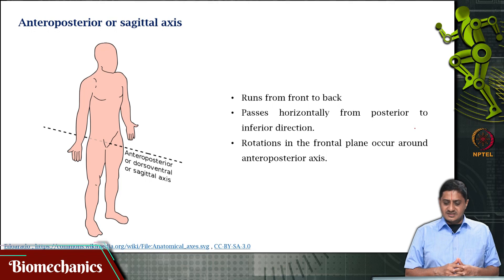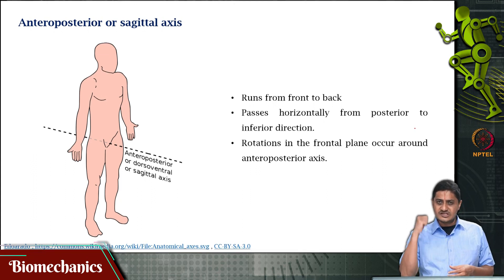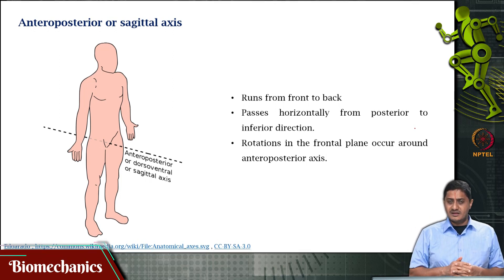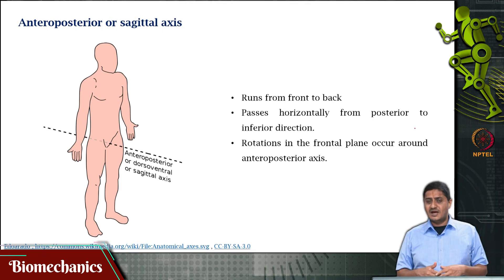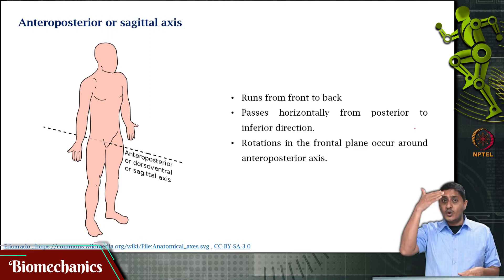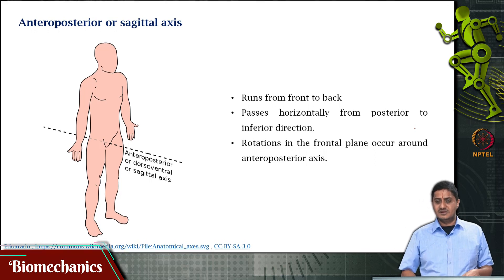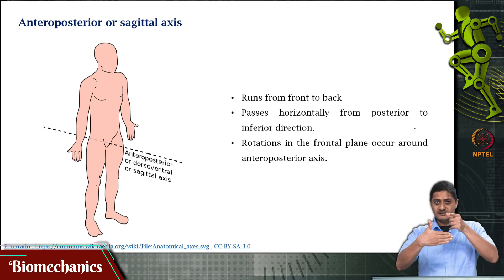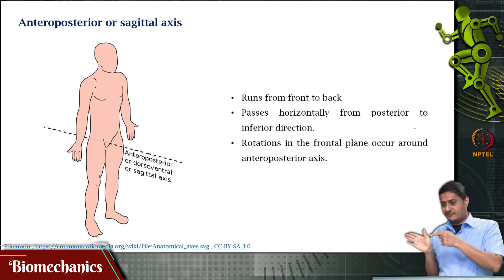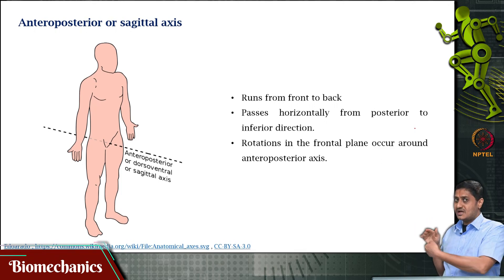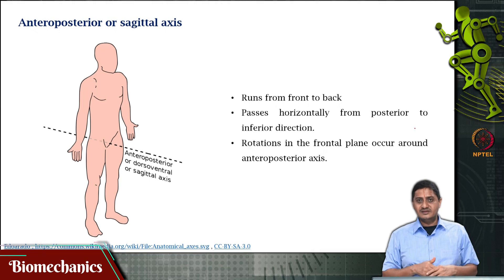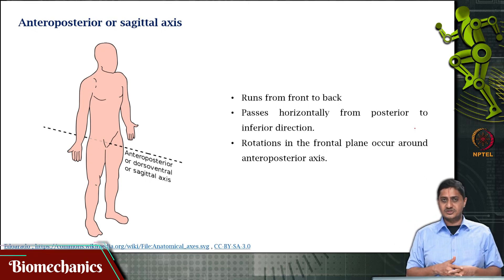The anterior-posterior axis runs from the front to the back, passing horizontally from posterior to anterior direction. Any movements that happen in the coronal or frontal plane will happen about this axis, because the axis perpendicular to the frontal plane is the anterior-posterior axis.